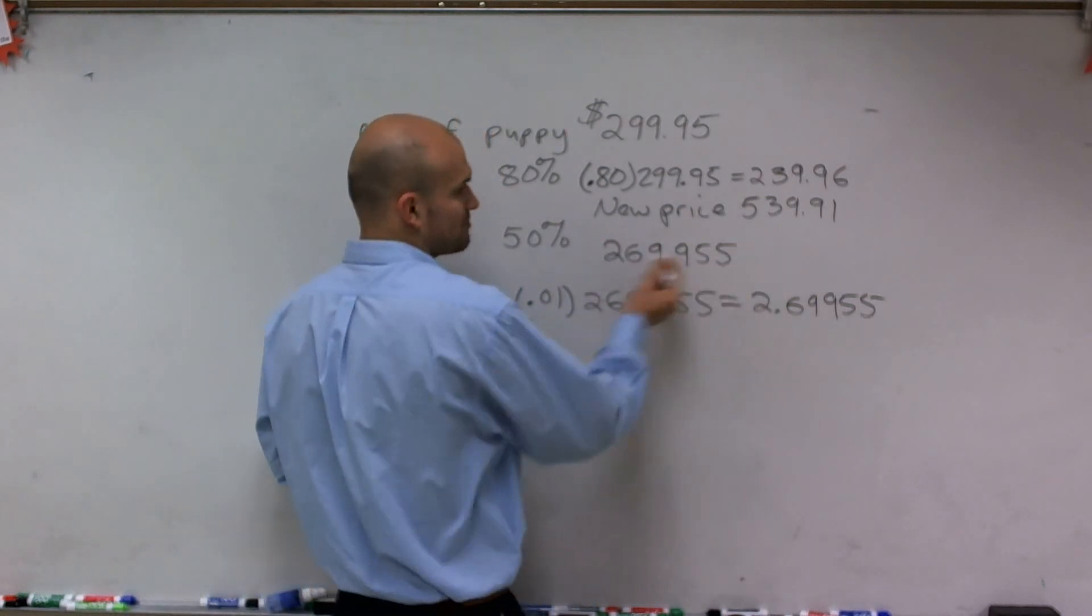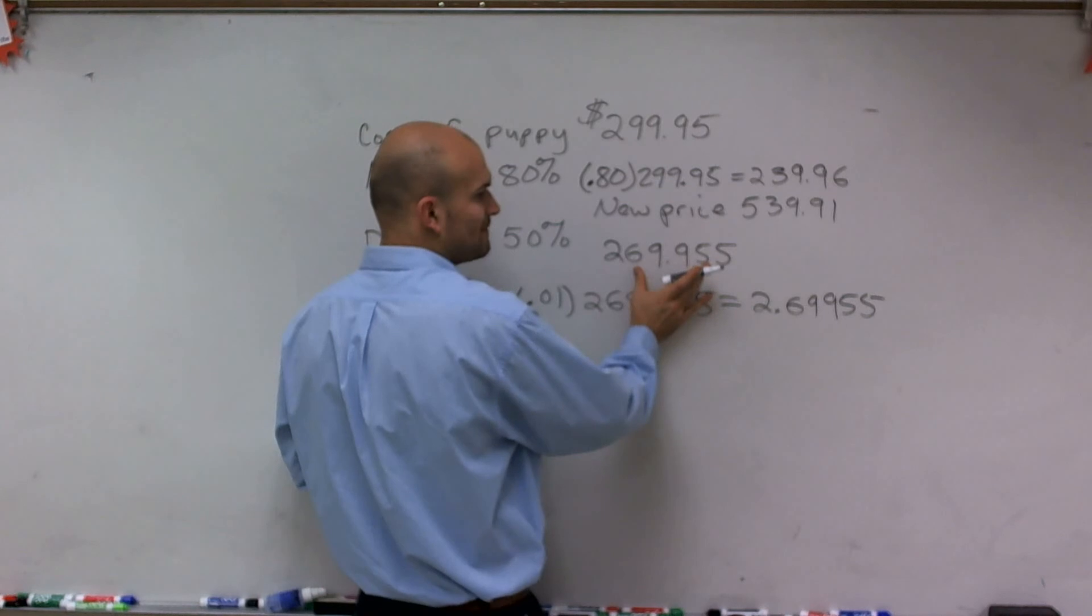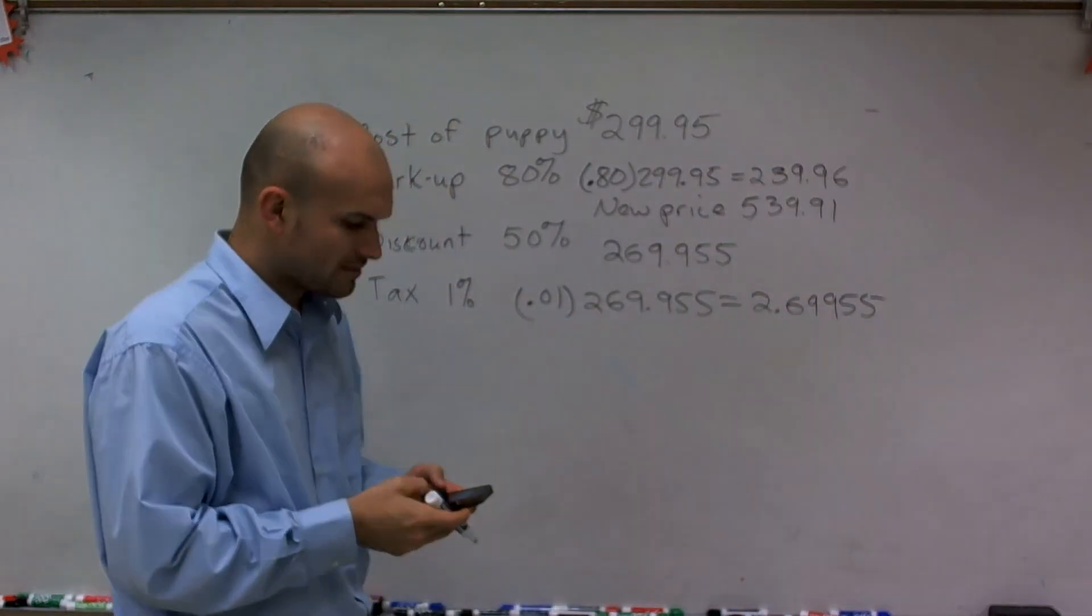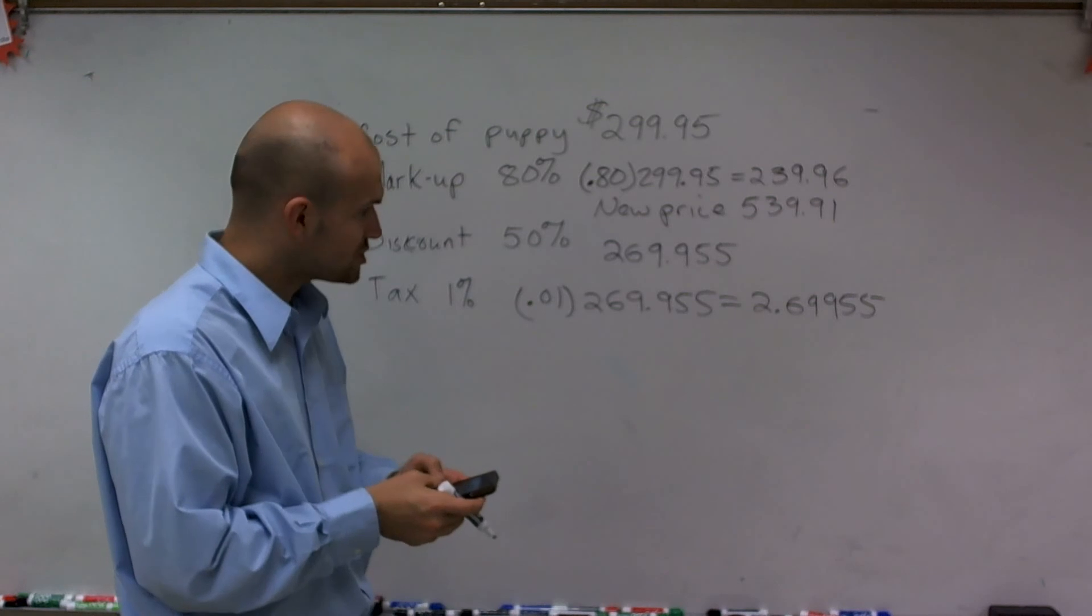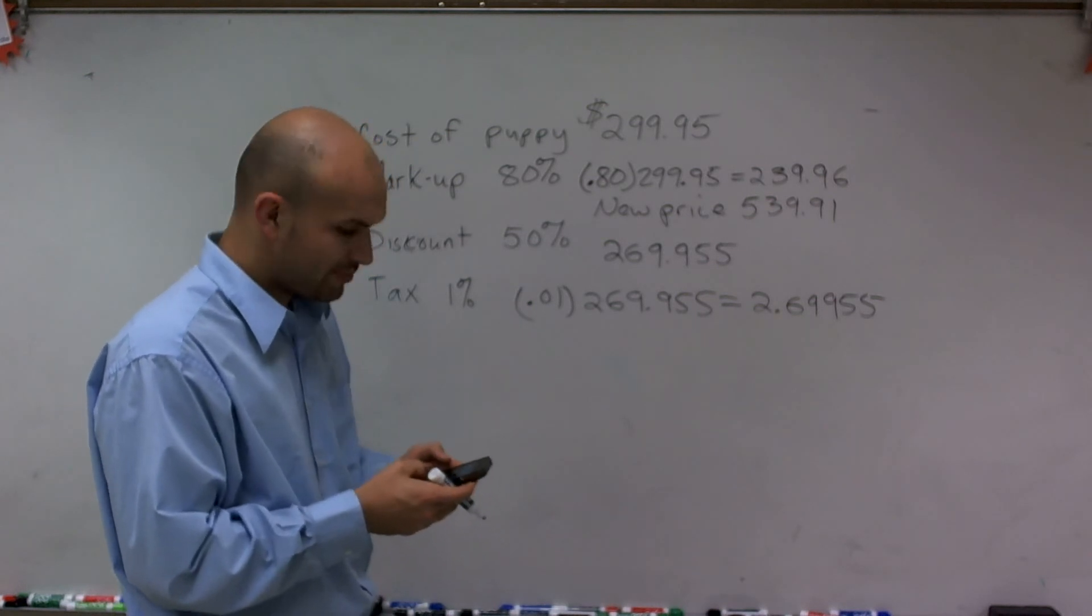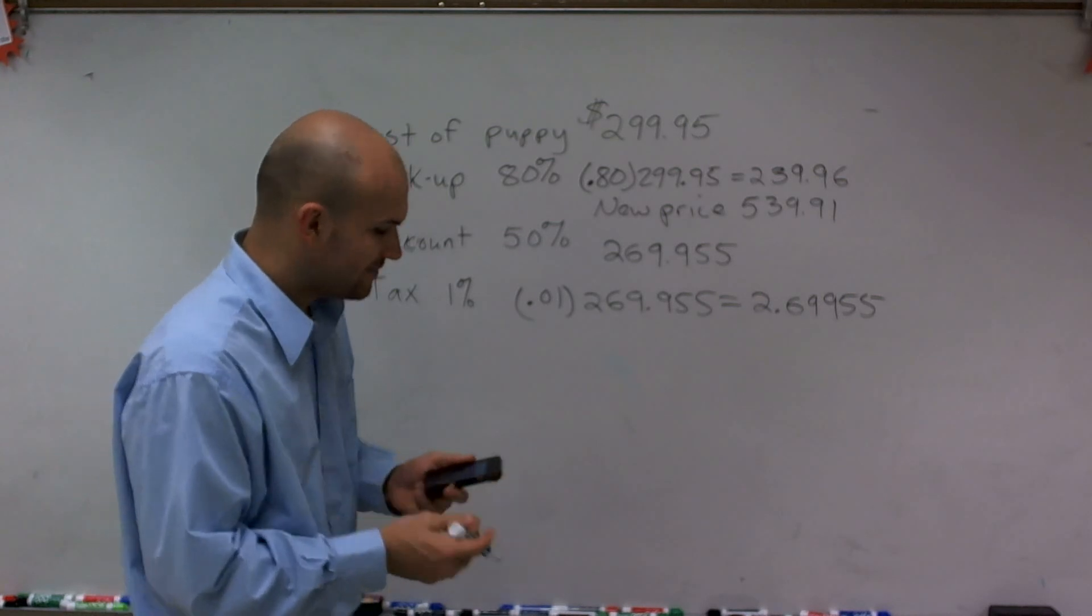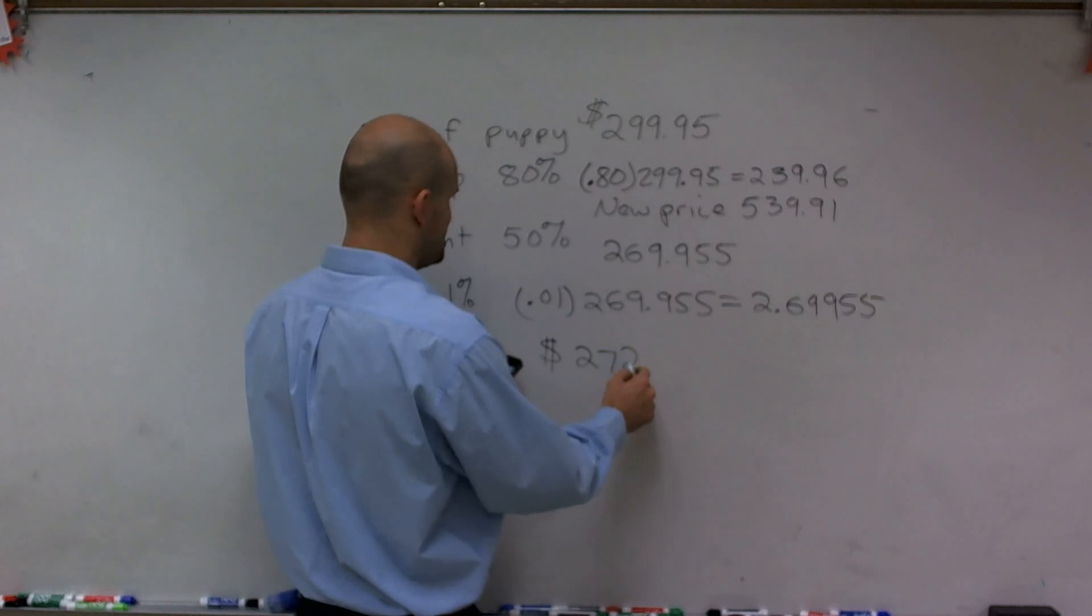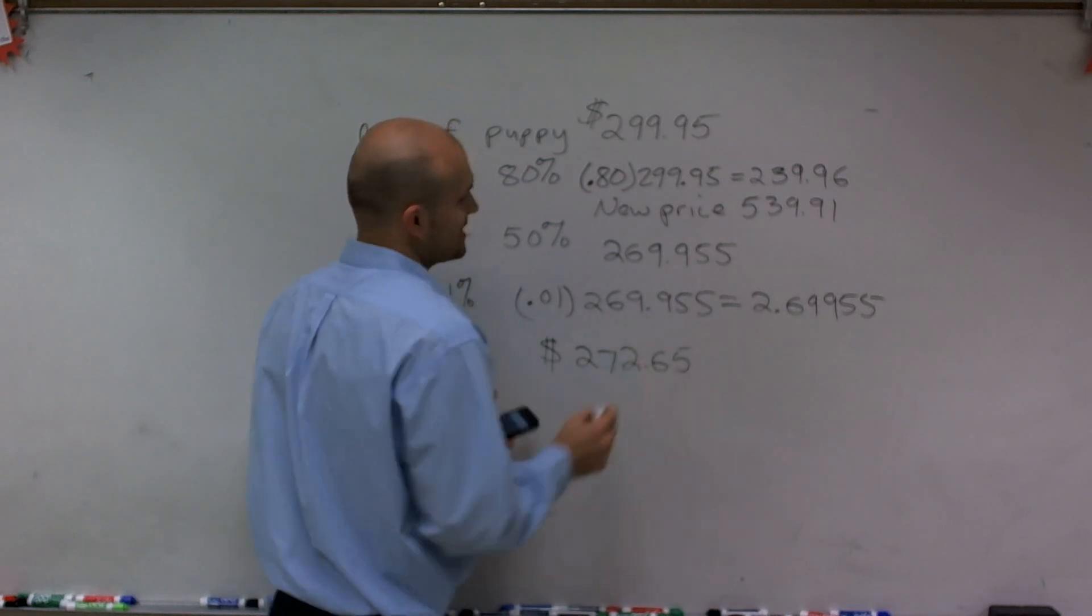So here's my purchase price. I purchased the puppy for this amount, and then I have to make sure I pay my tax. So I'm going to add the tax to my original purchase price, $269.95. And therefore, I get a final cost of $272.65 for the puppy.